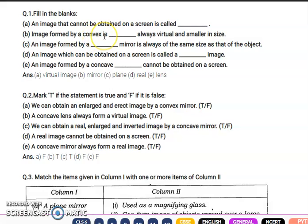Next part is image formed by a convex lens is always virtual and smaller in size. An image formed by a plane mirror is always of the same size as that of the object. These are the properties you need to know.